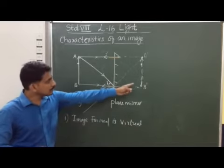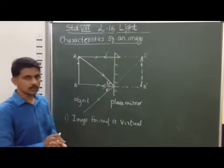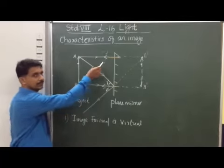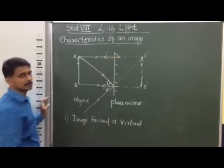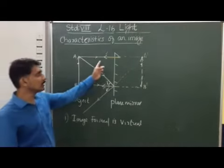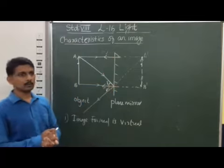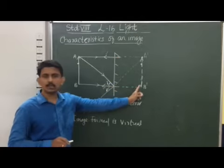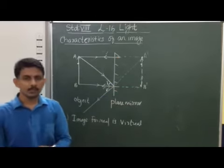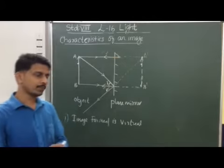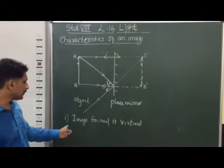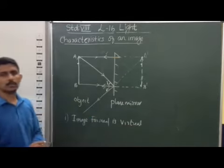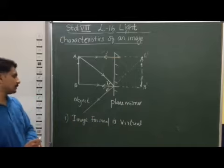The reason the image formed is a virtual image is because in the case of reflection, the light rays are not actually meeting. That is the reason we get this type of image — a virtual image. So the first property is that the image formed is considered as a virtual image.